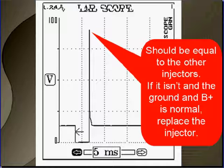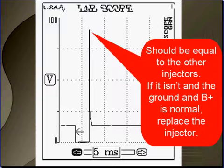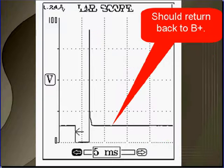When the PCM releases and turns off the injector, we're going to get an inductive kick. It should be equal to all other injectors. If it isn't, and the ground and the battery plus are normal, replace the injector. If you have one low one or one high one out of six, four, or eight, and B+ and ground are good, replace the injector. After the inductive kick, we should return back to normal battery voltage — charging system voltage.